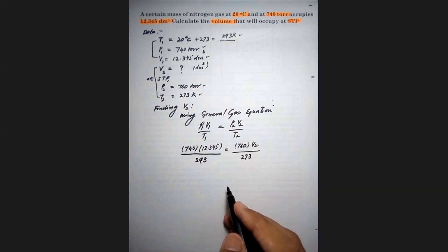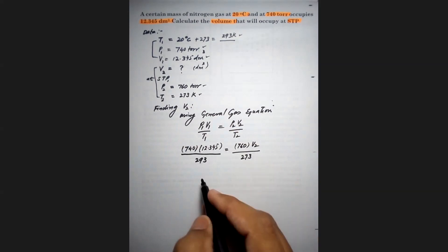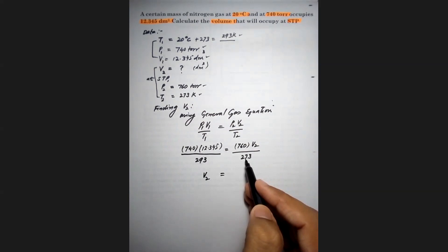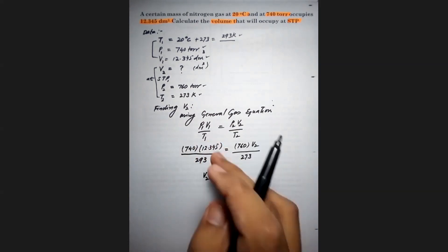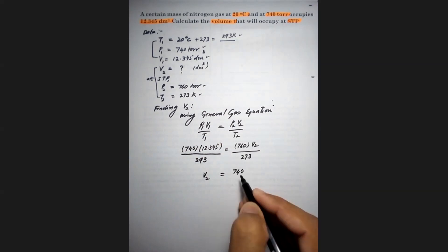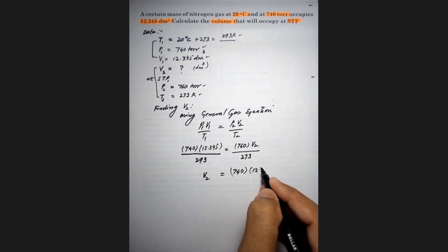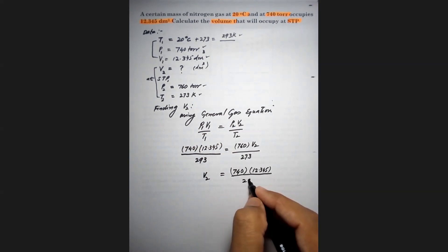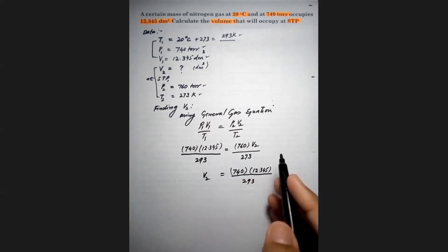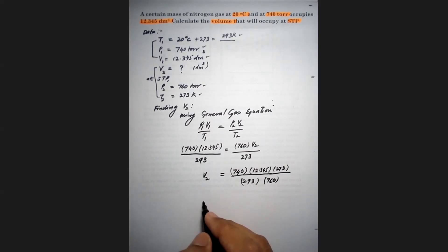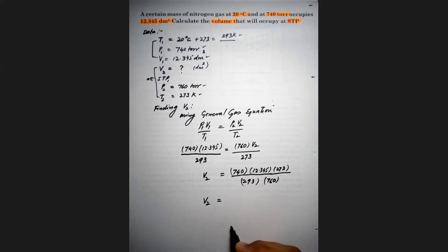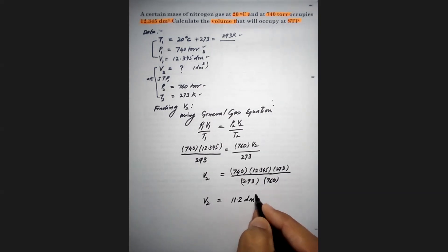T2 = 273. Rearranging the equation: 273 moves to multiply in the numerator and 760 divides in the denominator. So V2 = (740 × 12.345 × 273) / (293 × 760). Solving this gives the answer: V2 = 11.2 decimetre cube.